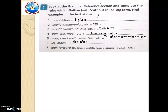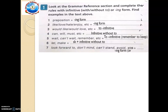Then 'make plus somebody' takes the infinitive without 'to'. And number seven: look forward to, don't mind, consider, avoid — these take the ING form. For example, 'avoid eating'. Did you get that right?